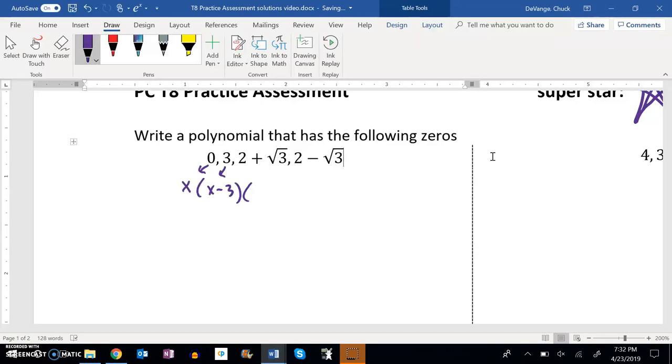If 2 plus square root of 3 is a zero, that would come from x minus that whole thing, so x minus 2 minus root 3, because I'm subtracting the whole thing, I'm subtracting each piece. And then x minus 2 plus square root of 3. Now what I need to do is multiply it on out.